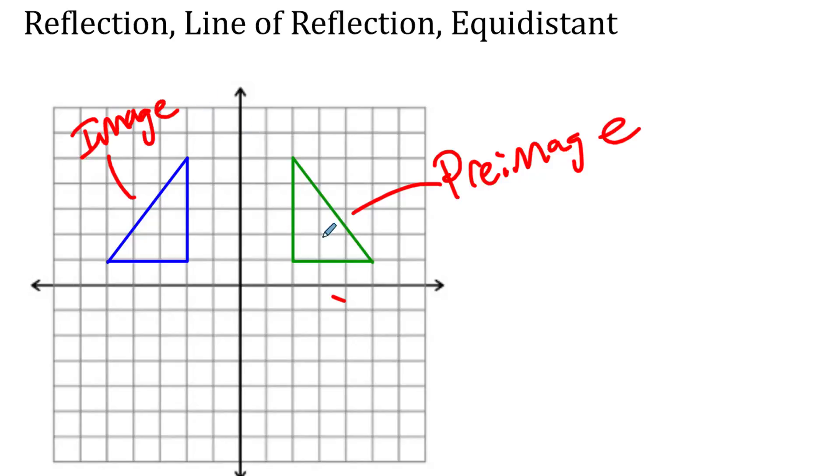So where's the line of reflection for the pre-image and image? Well, check this out. If you look right here, this is the line of reflection, which in this case is the y-axis. This shape is reflected over the y-axis.